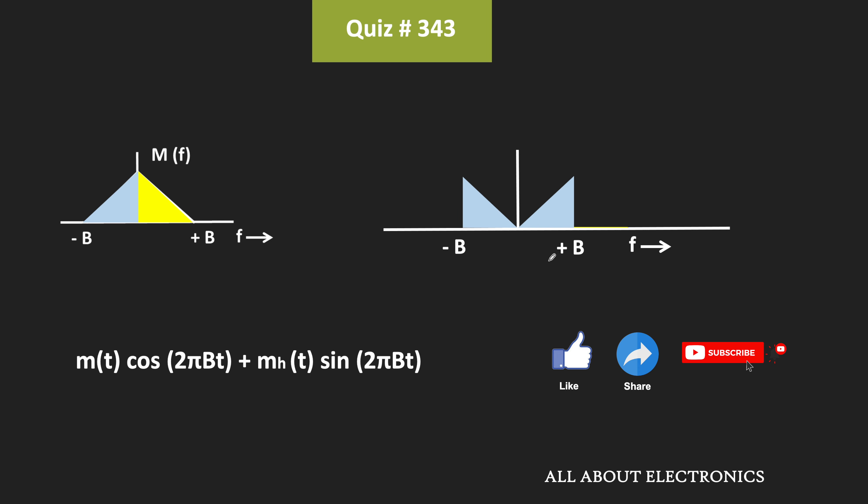So instead of this positive sign, suppose we have a negative sign, in that case, this lower sideband will get suppressed. And it is the case of the upper sideband suppressed carrier.